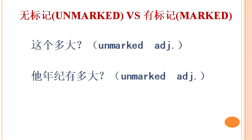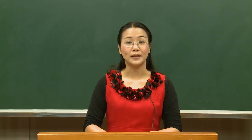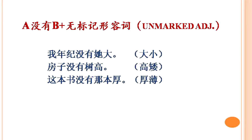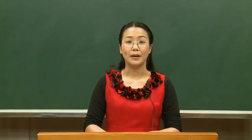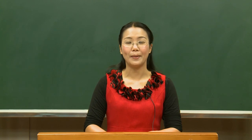When we ask about the size of something or the age of somebody, we often use the unmarked adjectives. Like: How big is it? 这个多大? Or How old is he? 他年纪有多大? Similarly, the unmarked adjectives are used in the 没有 pattern: 我年纪没有他大; 房子没有树高; 这本书没有那本厚. But both unmarked and marked adjectives can be used in the 不比 pattern.